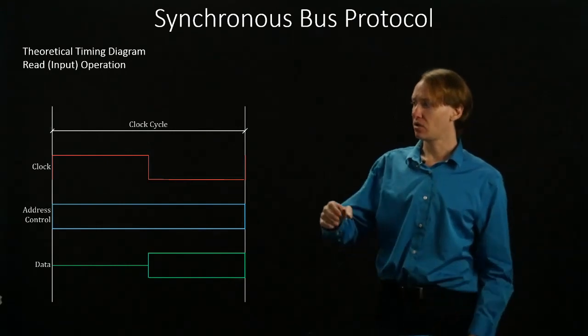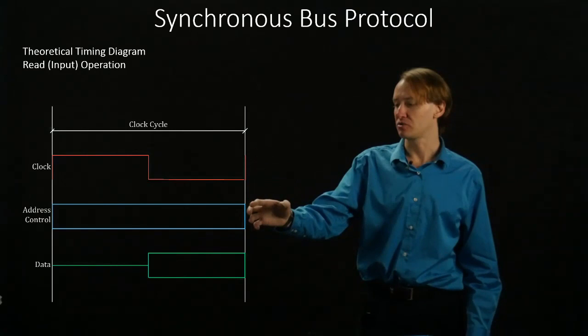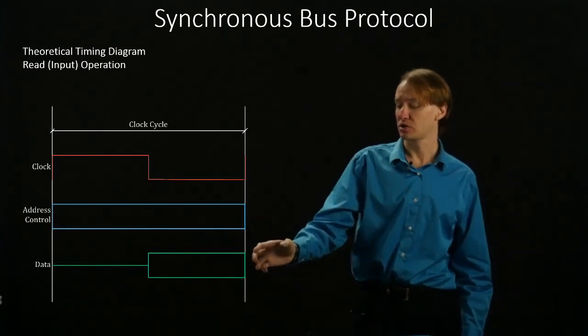Our timing diagram has a lot of the elements that you'd expect. We've got a clock cycle. We've got our address and our control. We also have our data.